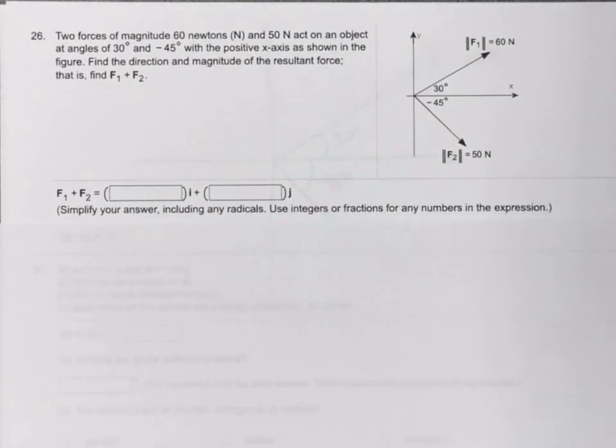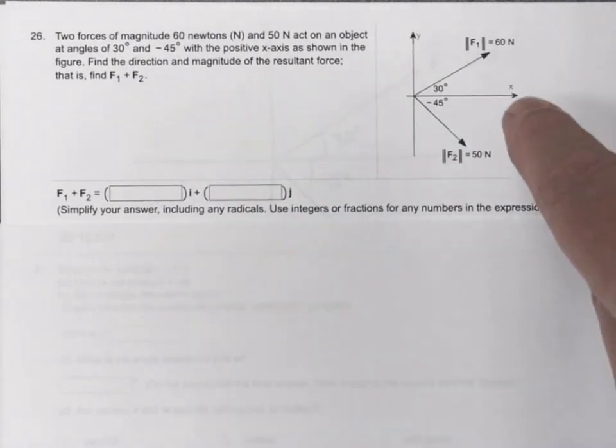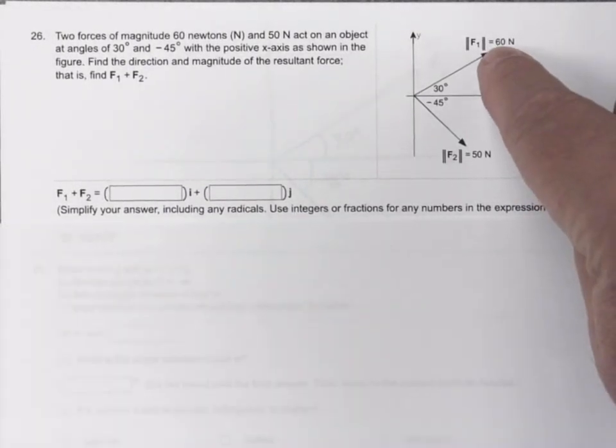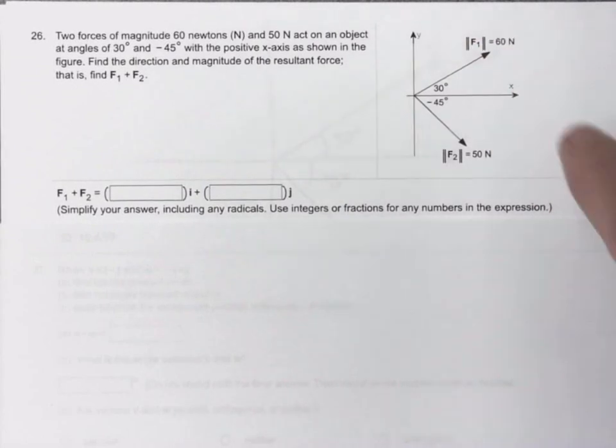But the reason why this is tricky is because you can't add vectors together when they are currently in the magnitude and direction format. The only time we can add vectors together is if they're in the IJ format. So for this problem, we're going to have to take force F1, convert it to an IJ vector, and then take force F2, convert it to IJ, and then add them together.